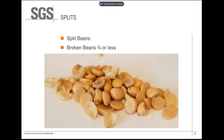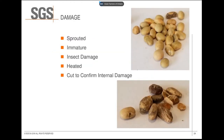Soybean splits are any beans that have fallen apart, or any broken beans that are three-quarters or less. This is generally determined using a slotted sieve or by hand-picking the splits out of the sample. Damaged soybeans are any sprouts, frost damage, shriveled or ground damage, insect damage, or immature or unsound beans.